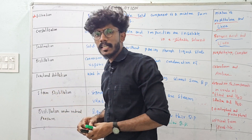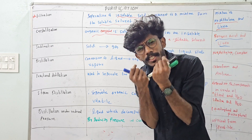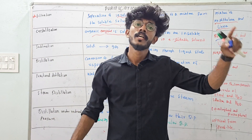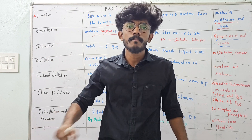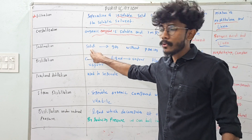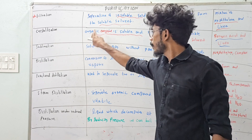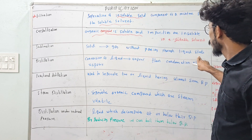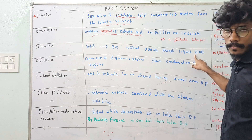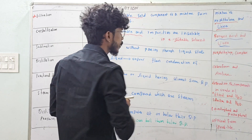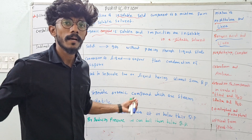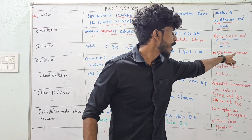Sublimation: if you've learned a little bit about it — the solid is directly converted to gas without passing through the liquid state. Conversion of a solid organic compound in the solid state directly to gas, without passing through the liquid state. Then the solid is directly converted into gas. We can then collect the gas and convert it back. For the impurity that does not sublime, you can use the organic compound like naphthalene or camphor.